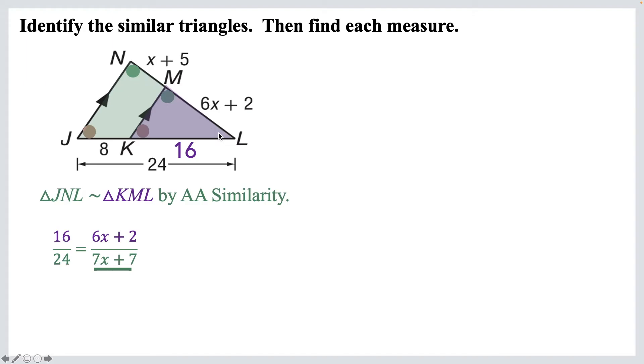Well look at this, the top side of this big triangle is this X plus 5 portion and the 6X plus 2 portion. Okay, so I've got to add those two together to get the 7X plus 7.